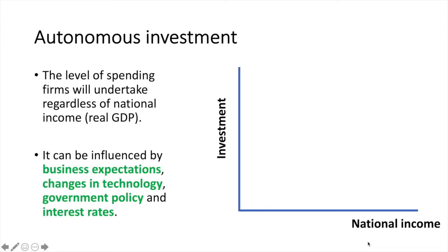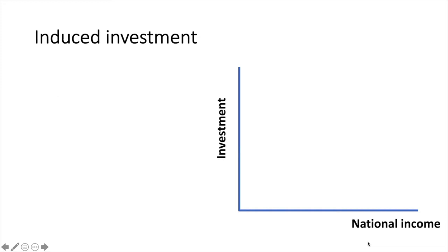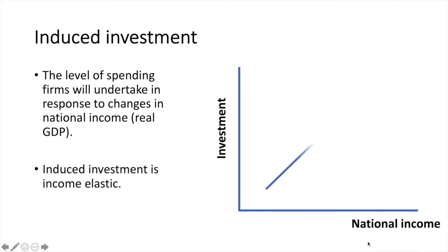Autonomous investment is the level of spending firms will undertake regardless of national income. It can be influenced by business expectations, changes in technology, government policy, and interest rates. Induced investment, however, is the level of spending firms will undertake in response to changes in national income — it is therefore income elastic.